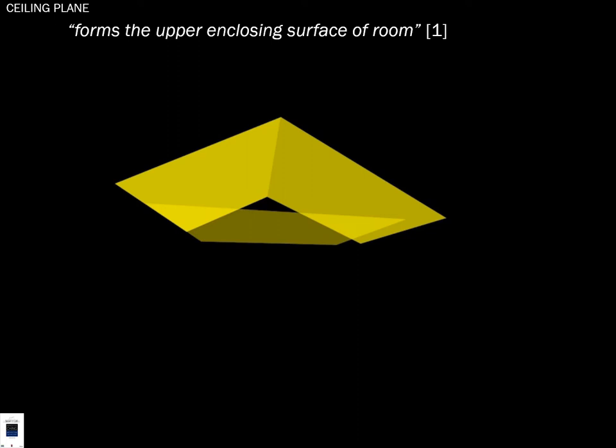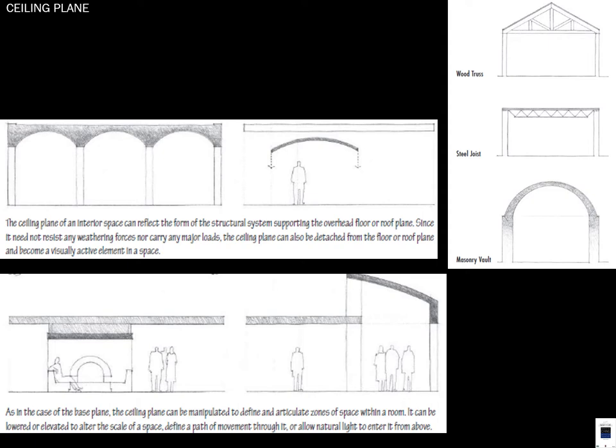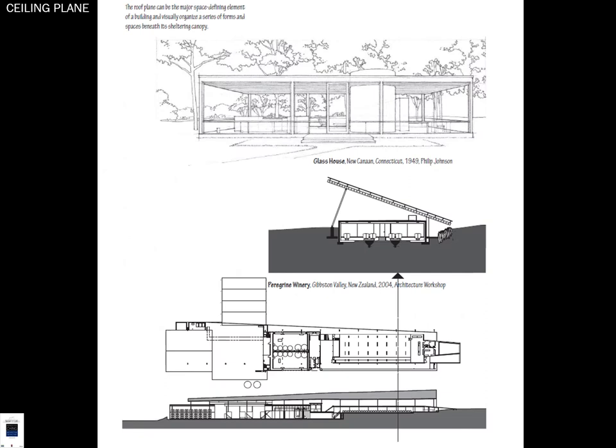Now looking at the overhead planes defining the space below — you can see how a curved space relates to the space below. It's not just a structural element; it's defining the space within. You can manipulate those spaces in your design, whether doing trusses, joists, steel joists, or masonry vaults. Each of these different overhead/ceiling planes defines the spaces below differently.